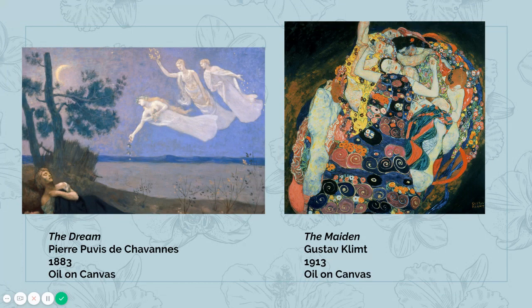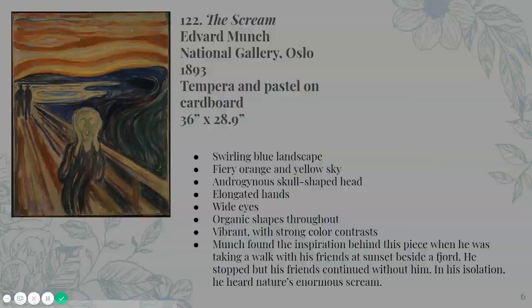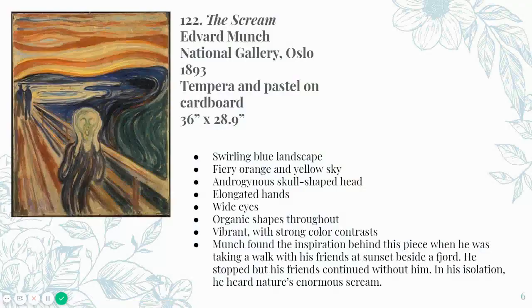Another example is a piece by Gustav Klimt, which we'll get to shortly. Our main image for Symbolism is number 122, called 'The Scream' by Edvard Munch. It is from 1893 and made with tempera — a type of paint — and pastel, a drawing medium, on cardboard.